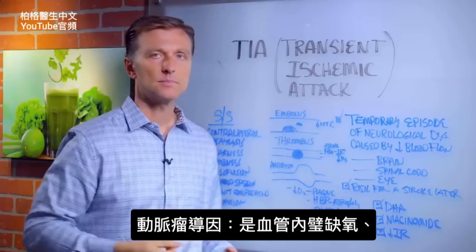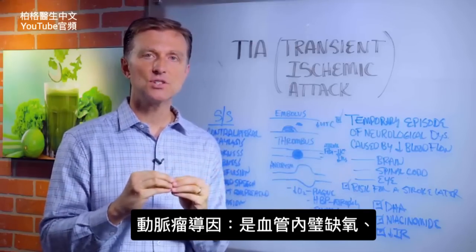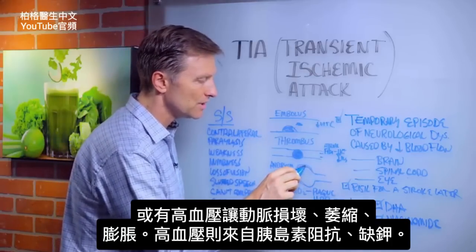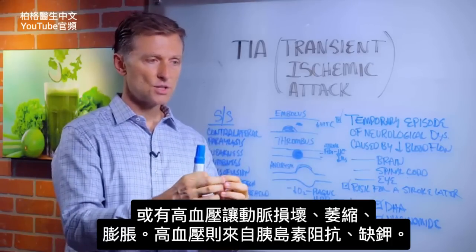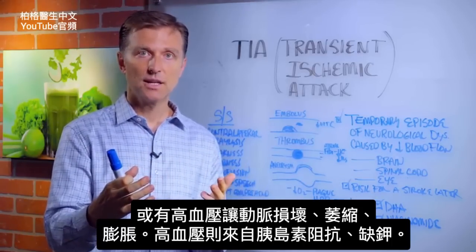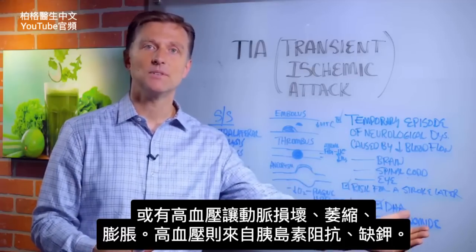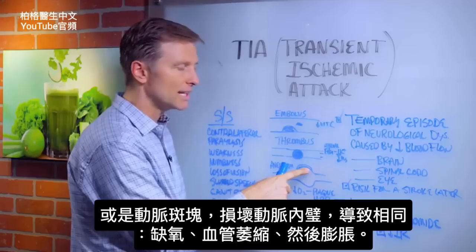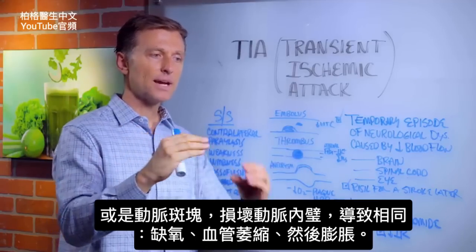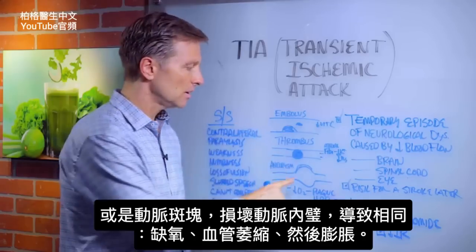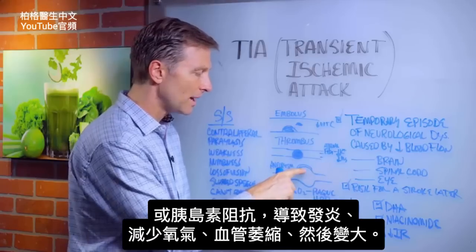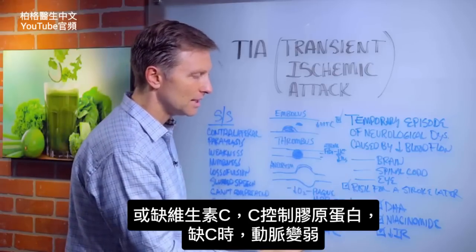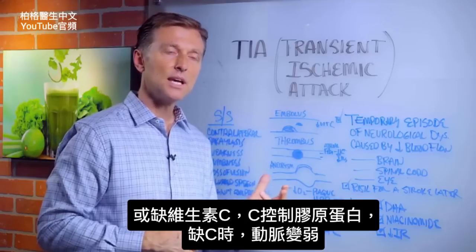What causes an aneurysm? The lining of the vascular system becomes deficient in oxygen — either from high blood pressure causing damage and atrophy of the arteries leading to ballooning, from smoking decreasing oxygen in the vascular system, from arterial plaquing damaging the lining, or from insulin resistance causing inflammation and decreased oxygen leading to vessel atrophy and enlargement. Vitamin C deficiency also plays a role since it controls collagen production, and without it your arteries get weaker.